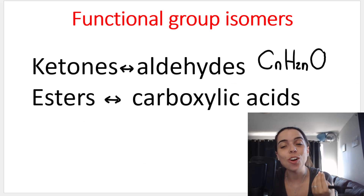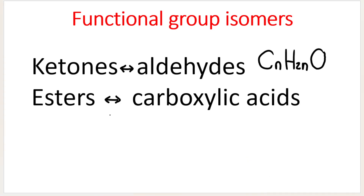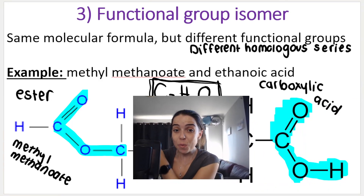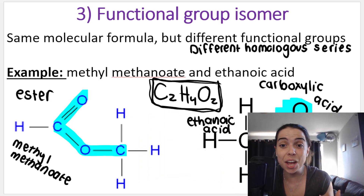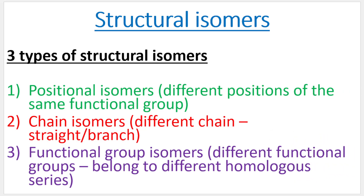Then we have esters and carboxylic acids — they always go together as functional group isomers because their general formula is CnH2nO2. As shown earlier, these are functional group isomers: exactly the same molecular formula, different functional groups, different structural formulas, and different homologous series — one is an ester, the other is a carboxylic acid. In the very next video, I will go over more detailed examples of structural isomers, especially functional group isomers. I'll see you there.